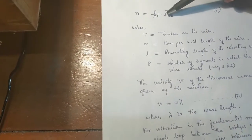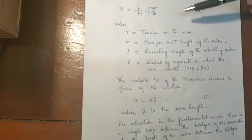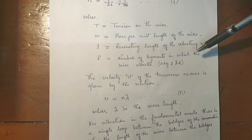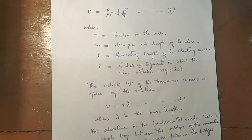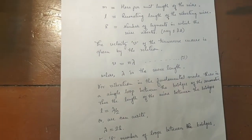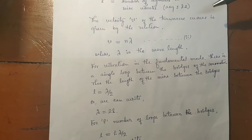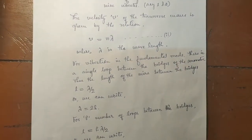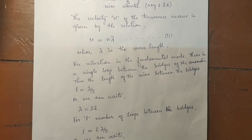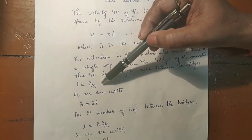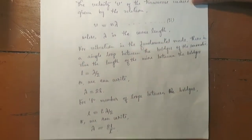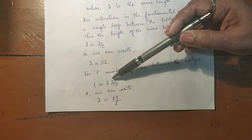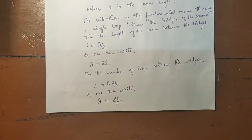n equals to p divided by 2l into root of T by m, where T is the tension on the wire, m is the mass per unit length of the wire, l is the resonating length of the vibrating wire, and p is the number of segments in which the wire vibrates — say one or two loops. Now the velocity v of the transverse wave is given by v equals to n·λ, where λ is the wavelength. For vibration in the fundamental mode there is a single loop between the bridges of the sonometer wire, thus l equals to λ/2, or λ equals to 2l. For p number of loops between the bridges, the relation becomes l equals to p·λ/2, or λ equals to 2l/p.